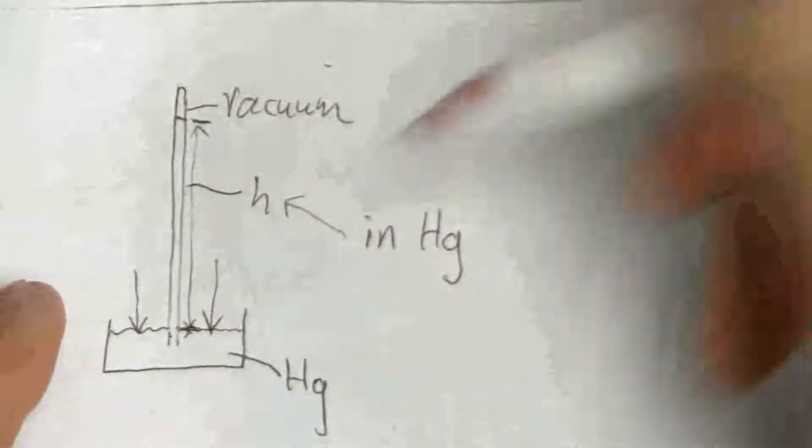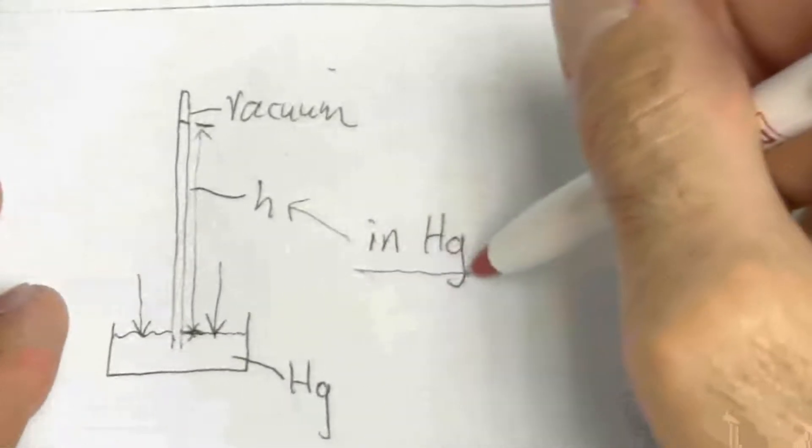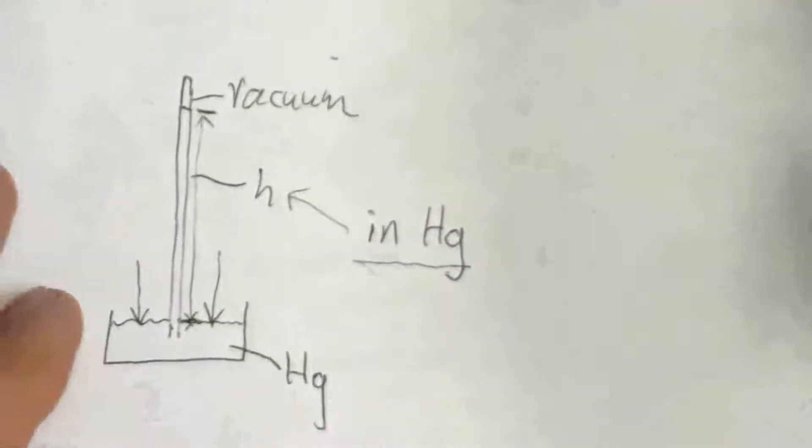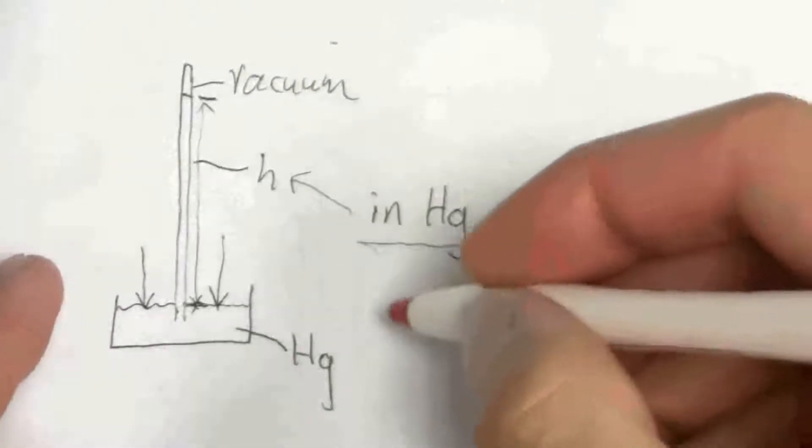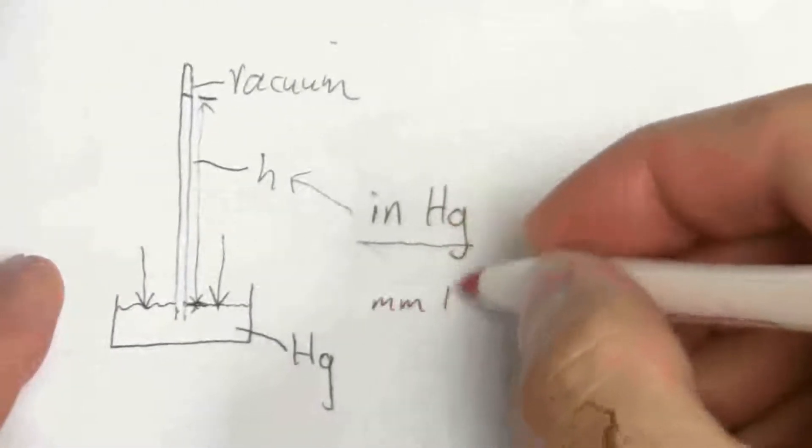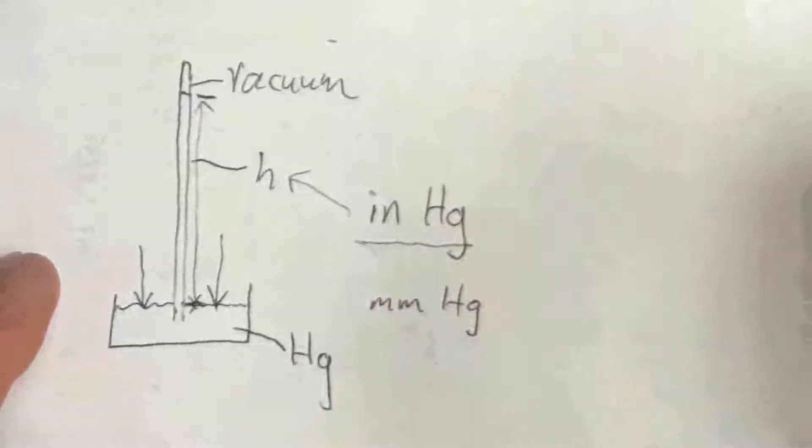and you measure the height of mercury with that vacuum on top, and that is the pressure measured in inches of mercury. In the metric system, we have a similar thing, millimeters of mercury.